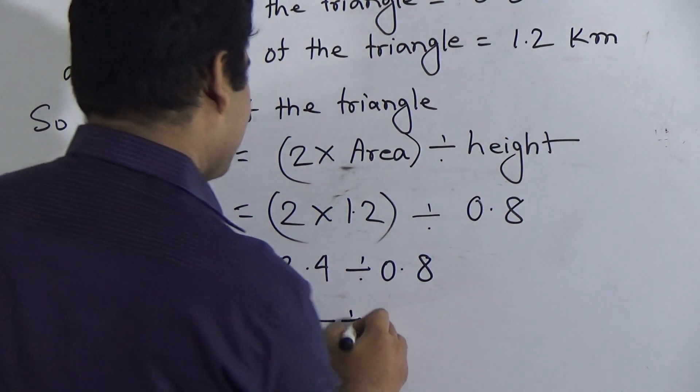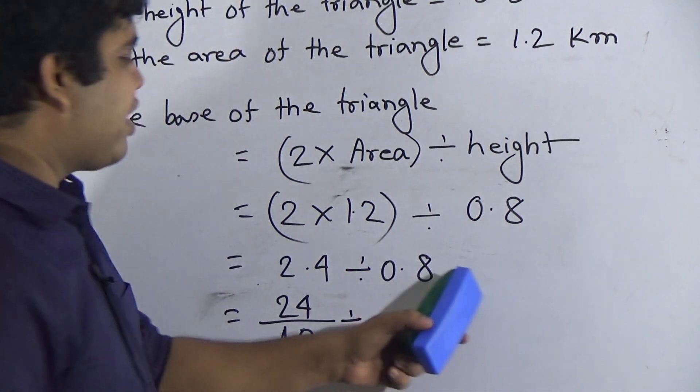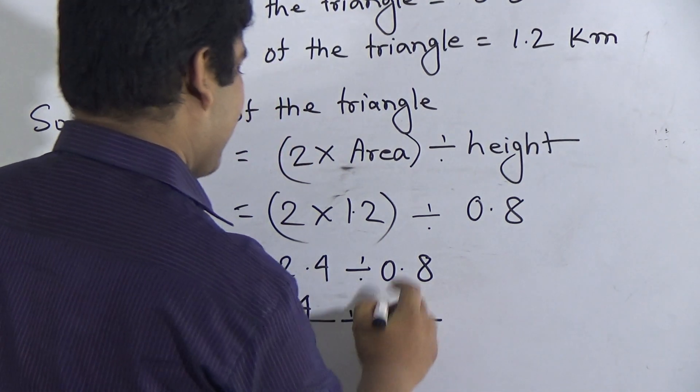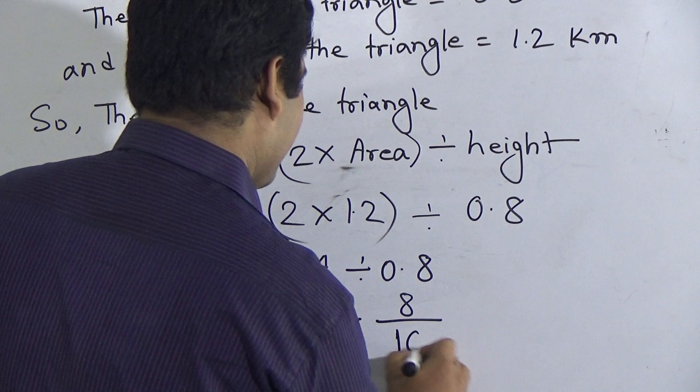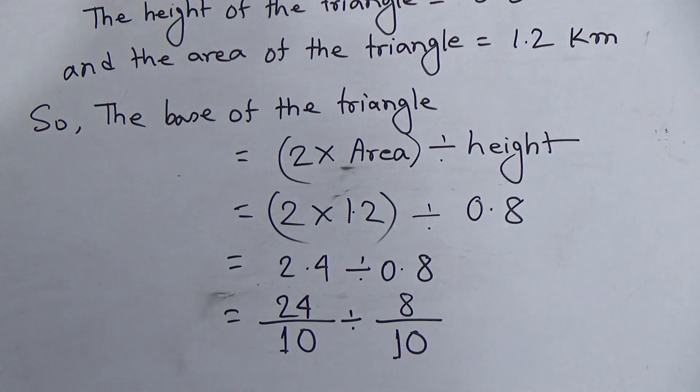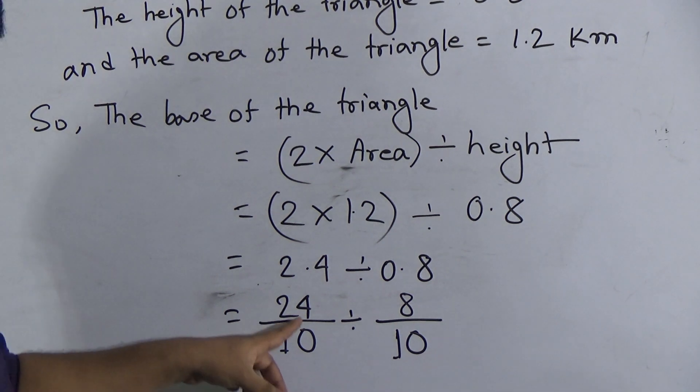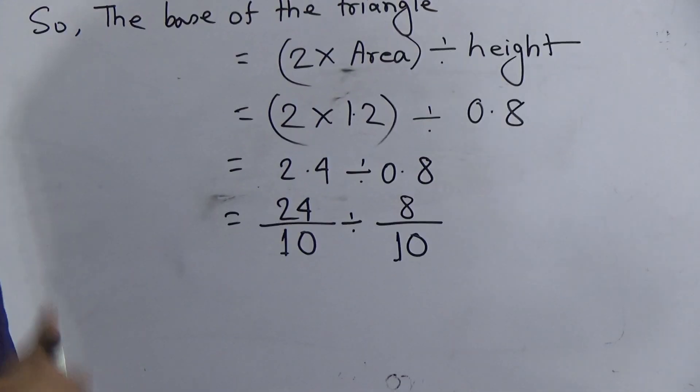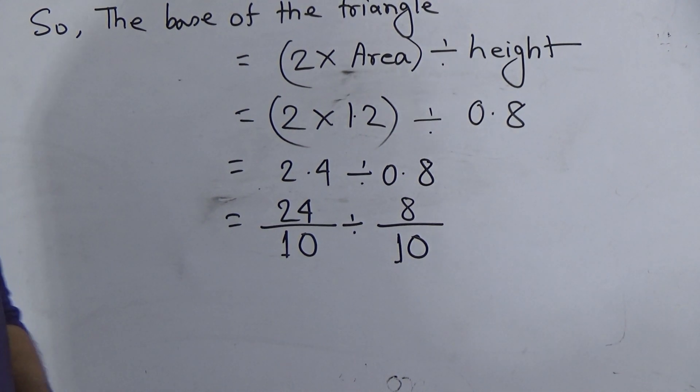This division sign is here. After that, 0.8. That means, we can write this number as 8 divided by... after point, only one digit. So, we give one zero. So, 24 by 10 divided by 8 by 10. What do you mean by division of one fraction by another fraction? Division of one fraction by another fraction means multiplication of one fraction with the reverse of the second fraction.